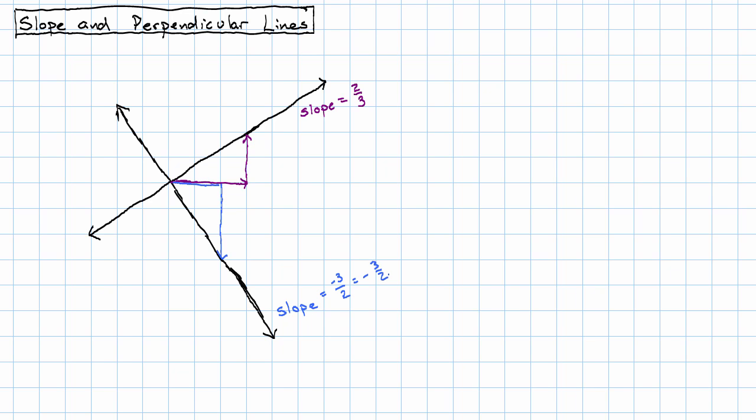But this is what I want you to notice about these two triangles. This angle and this angle are the same. These are both right angles. This angle and this angle add up to a right angle.